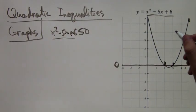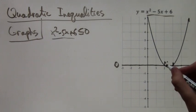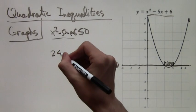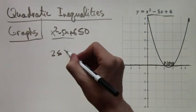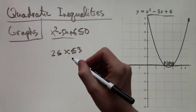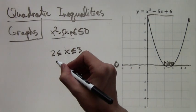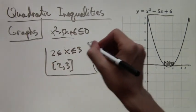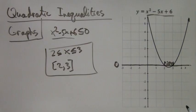So the solution set has to be all points between x equals 2 and x equals 3. So 2 is less than or equal to x is less than or equal to 3 is the solution set. We can also write this in interval notation: 2 comma 3 with brackets because we are including 2 and 3.